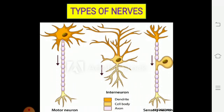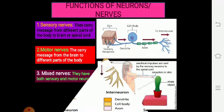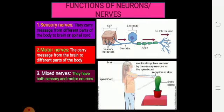Motor neuron is the first type. Interneuron has another name — mixed neuron. And the third one is the sensory neuron. These are the structures of the different kinds of neurons.